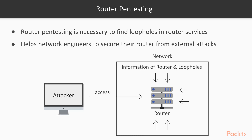For example, if this is the attacker and this is your router, the attacker wants to access the router because the router contains all the services. If the attacker has access to the router, they can manipulate and intercept all the services. That's why router pentesting means getting information about router vulnerabilities or loopholes.